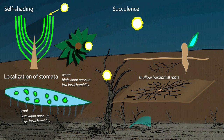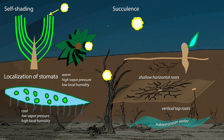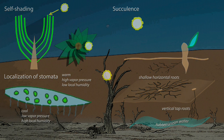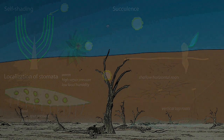Deep tap roots are also often used by desert plants, such as mesquite or shepherd's tree. This only works where water availability is reliable, even if the source might be deep. As such, tap roots are not really an adaptation to desert conditions, since this is what plants in more mesic environments do.